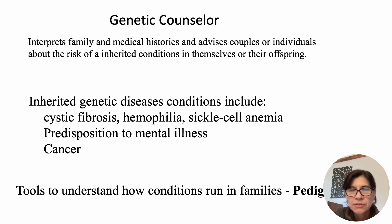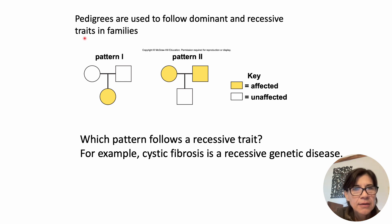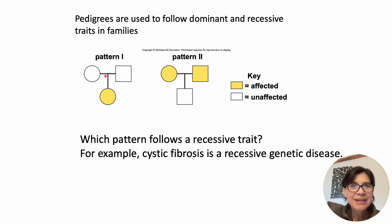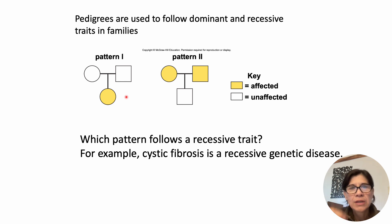Pedigrees are basically like a family tree. A circle represents a female, a square represents a male, and a line between the two means a union — not necessarily marriage, but some union where those two individuals had an offspring. In pattern one they had a girl; in pattern two the female and male had a male. In pedigrees, the filled-in individuals are the affected individuals — whatever trait we're following, the filled-in ones have that trait.